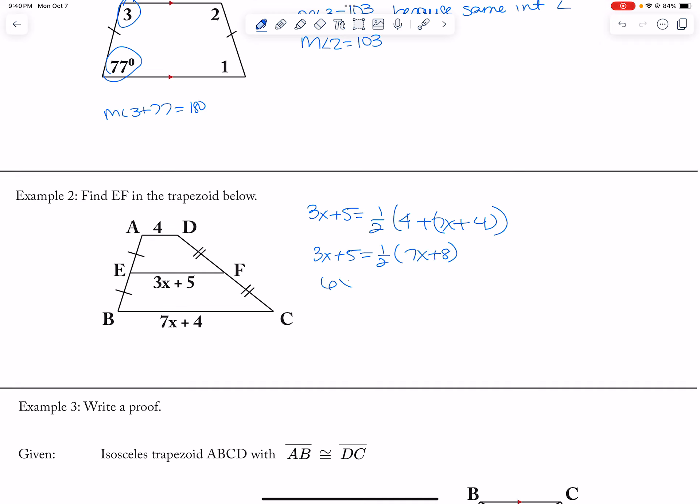Multiply both sides by 2, so I get 6x plus 10 is equal to 7x plus 8. Negative x is equal to negative 2, so x is equal to 2. I wanted a length of E to F, which is 3x plus 5, so this is 3 times 2 plus 5, which is 11.